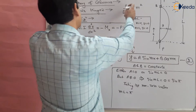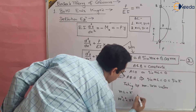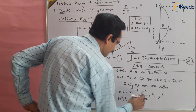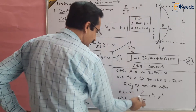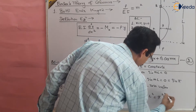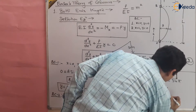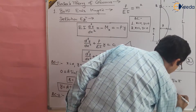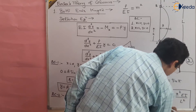Since m² = P/EI, substituting: (P/EI)·L² = π². From here we can get the Euler's load: Pe = π²EI/L². This is the safe load given by Euler's theory, where Pe denotes the Euler's load.